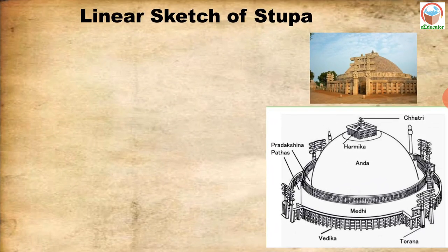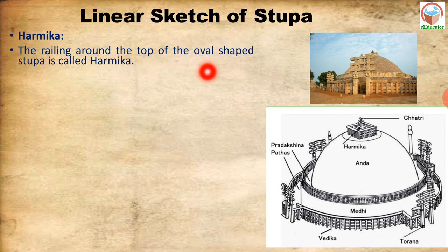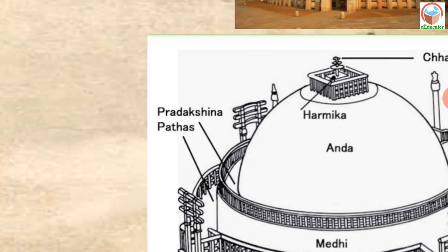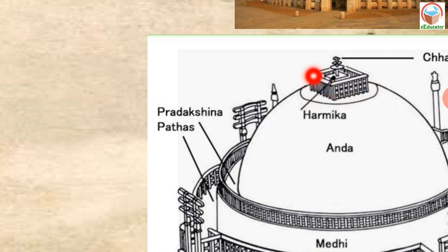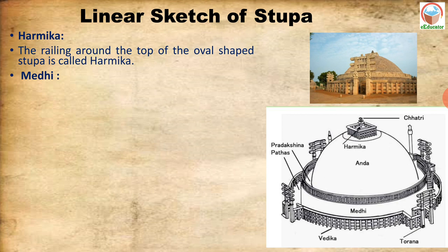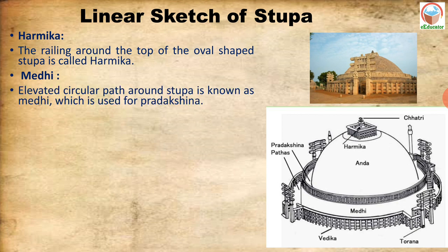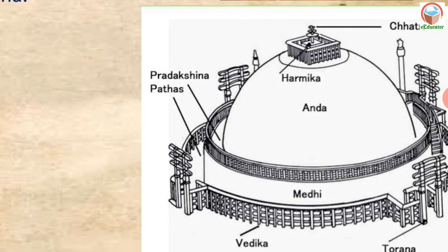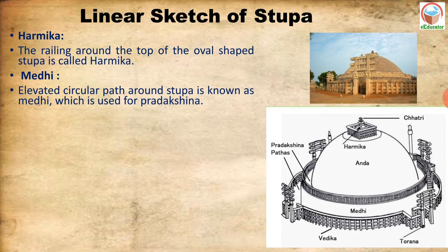Let us discuss the parts of a Stupa using a linear sketch. The railing around the top of the oval-shaped Stupa is called Harmika. The elevated circular path around the Stupa, slightly above ground level, is known as Medhi, and it is used for circumambulation — Pradikshana. The Medhi allows devotees to walk around the Stupa for worship.